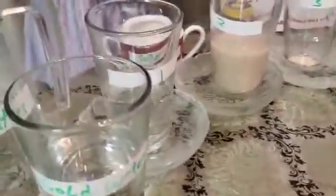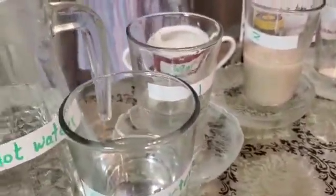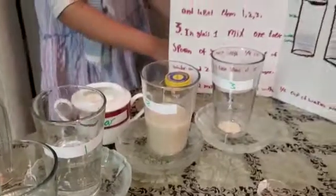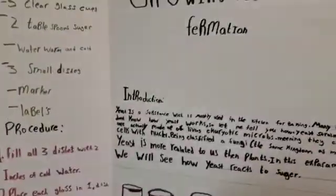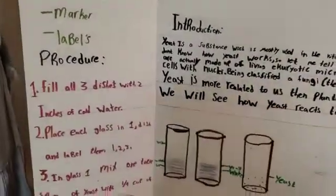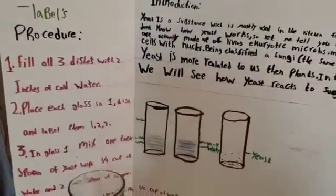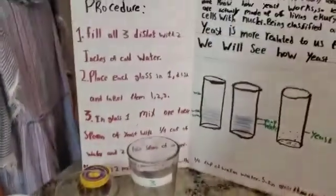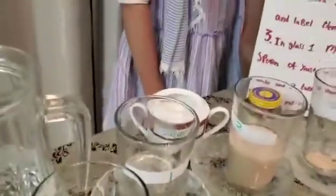Procedure. Fill all three dishes with two inches of cold water. Place each glass in one dish and label them one, two, three. In glass one, mix one tablespoon of yeast.